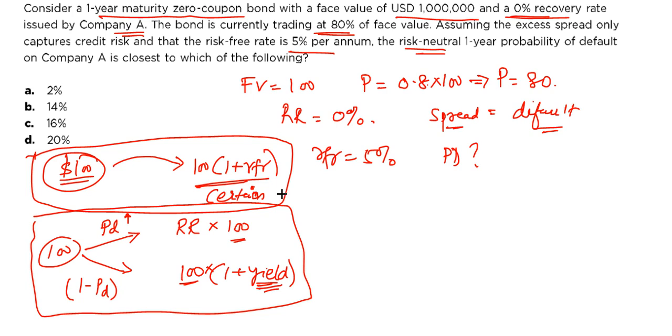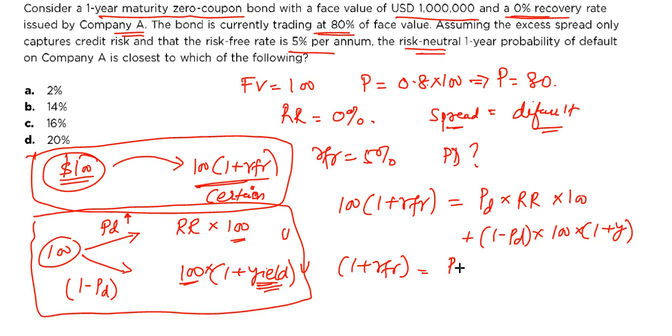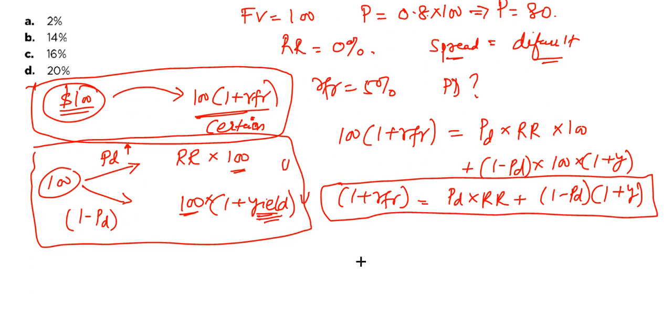So this is certain part. This should be equal to this uncertain and this uncertain part combined. So with that I can say that 100 into 1 plus RFR should be equal to probability of default PD into recovery rate into 100 plus 1 minus probability of default into 100 into 1 plus Y. Now 100 will get cancelled. You have 1 plus RFR will be equal to PD into RR plus 1 minus PD into 1 plus Y. This is a very important formula. You should remember this formula for the examination.